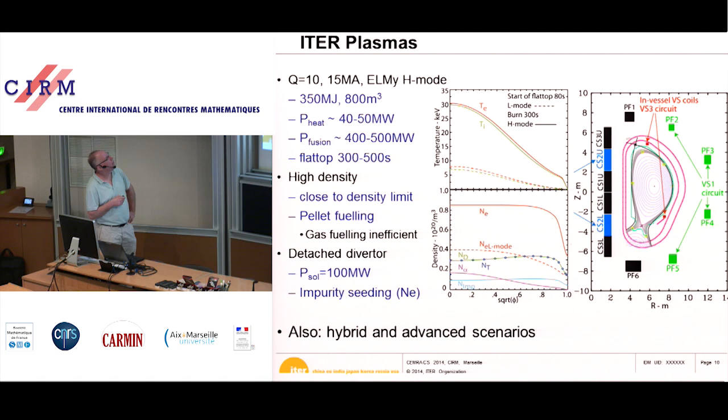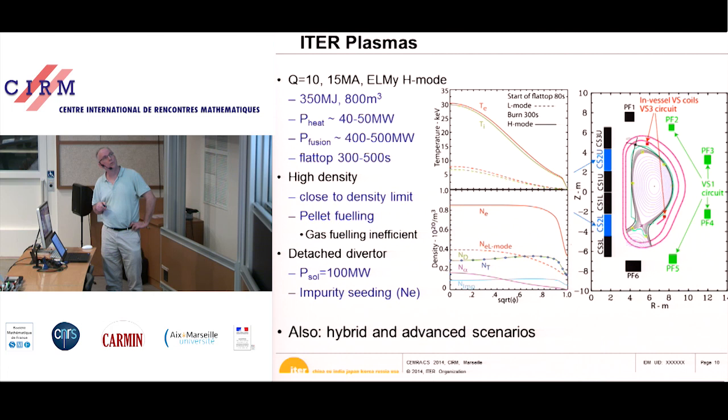Operation will last 300 to 500 seconds. ITER needs to operate at very high density for several reasons — mostly to protect the machine where the plasma touches it. You need high density and low temperature so that you don't damage the machine too much, which means operating close to a density limit.